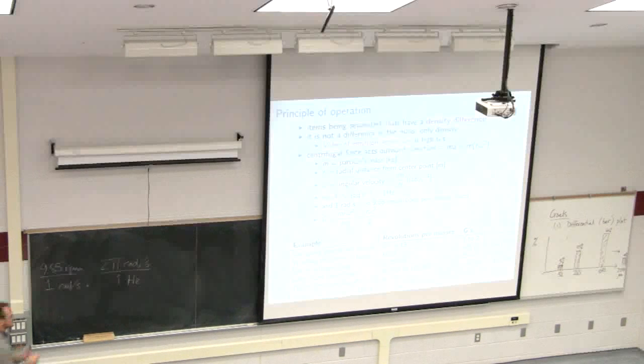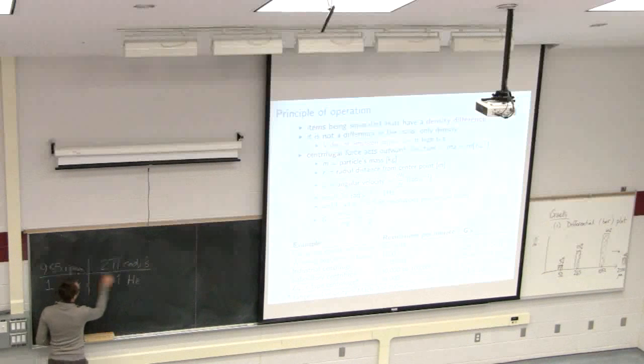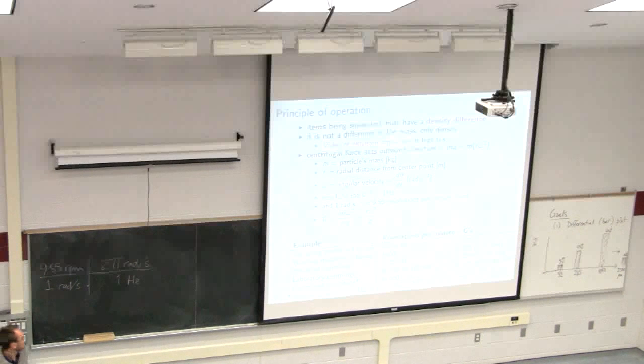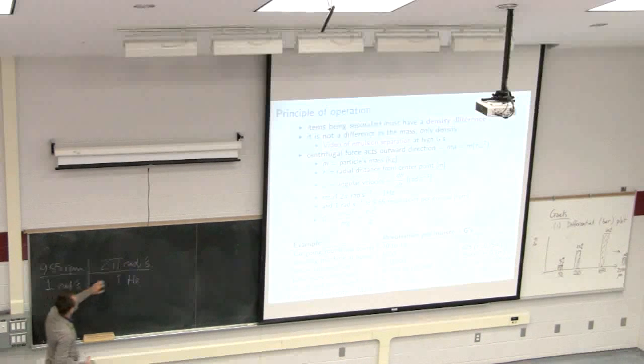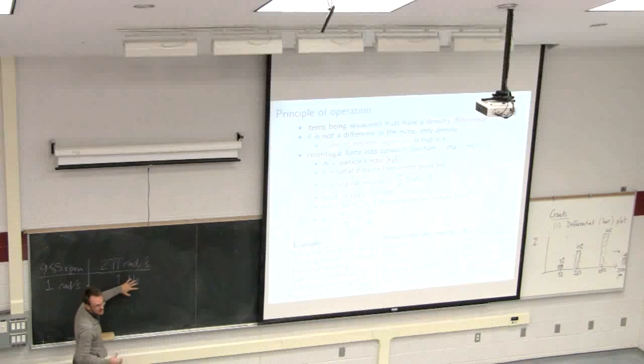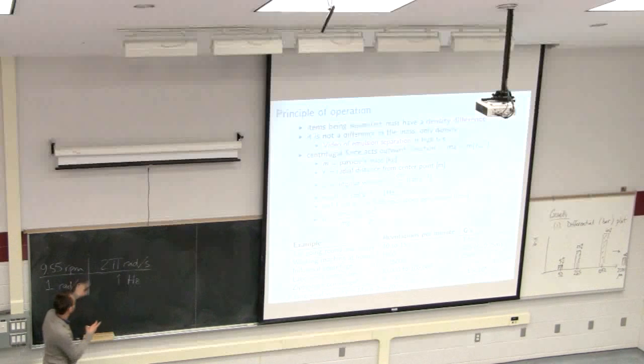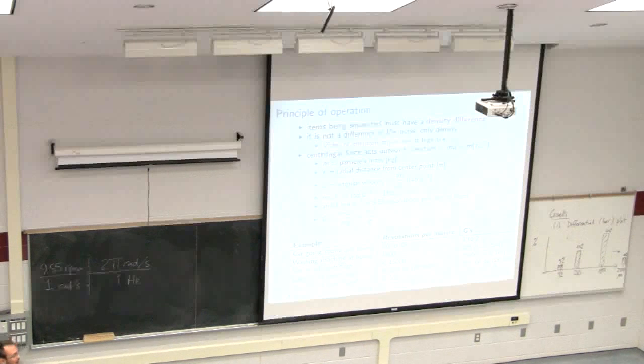So that's the link over there. 9.55 RPMs is equal to one radian per second. And 2 pi radians per second is one hertz. So I'm just multiplying by a sequence of ones over here, as you normally do. 9.55 RPMs is equivalent to one radians per second, but 2 pi radians per second is equal to one hertz. You can use that, simplify it a little bit, and link RPM then to hertz.